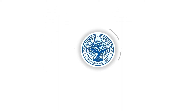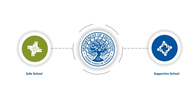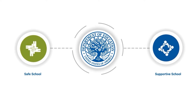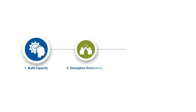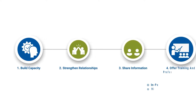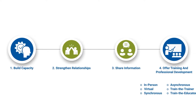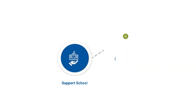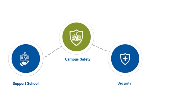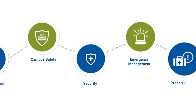Under the administration of the U.S. Department of Education's Office of Safe and Supportive Schools and in collaboration with our local, state, national, and federal partners, we use a four-fold approach to carry out our mission to support school and campus safety, security, emergency management, and preparedness.